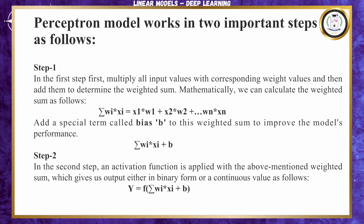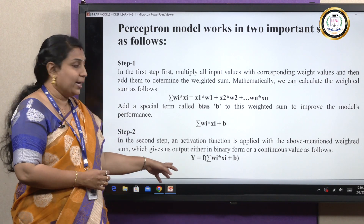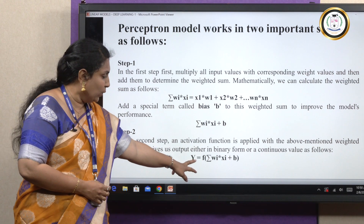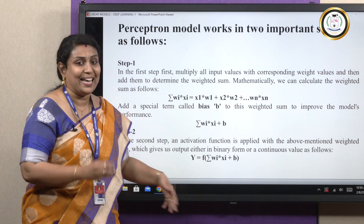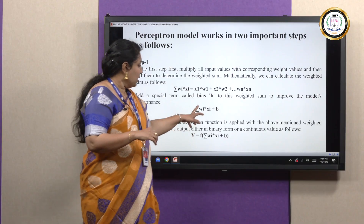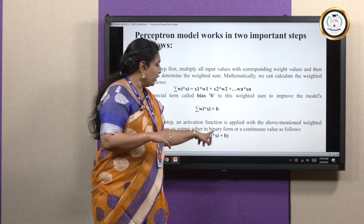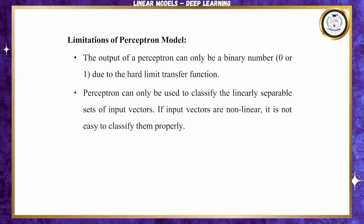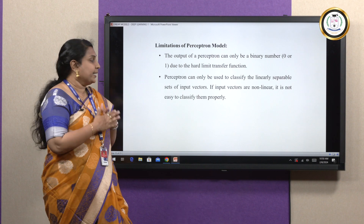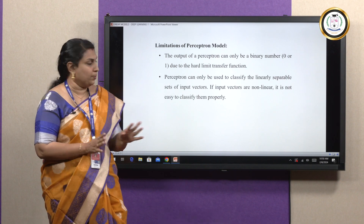In step 2, after adding the bias, you give the sum to the activation function. The mathematical representation is: Y = F(Σ(Wi × Xi) + B), where F represents the activation function. There are limitations of perceptron: the output can only be a binary number — 0 or 1. Perceptron can only be used to classify linearly separable data; it cannot be used for non-linearly separable data.